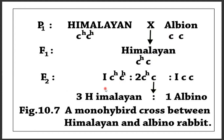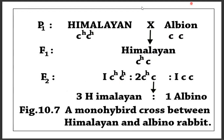In the case of complete dominance, we get a ratio of 3:1 in the F2 generation, while in the case of incomplete dominance, the ratio is 1:2:1.